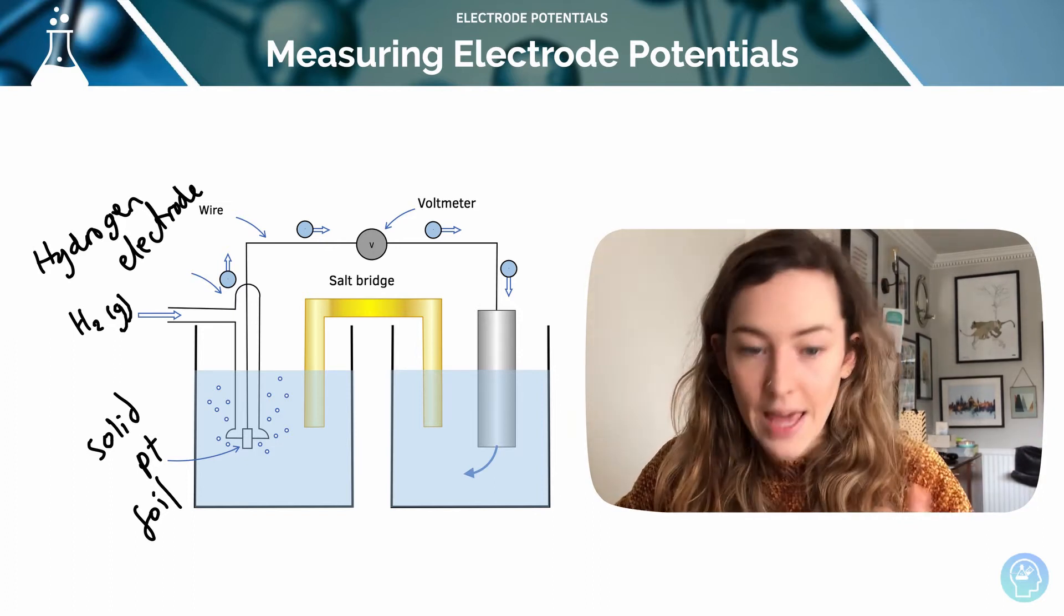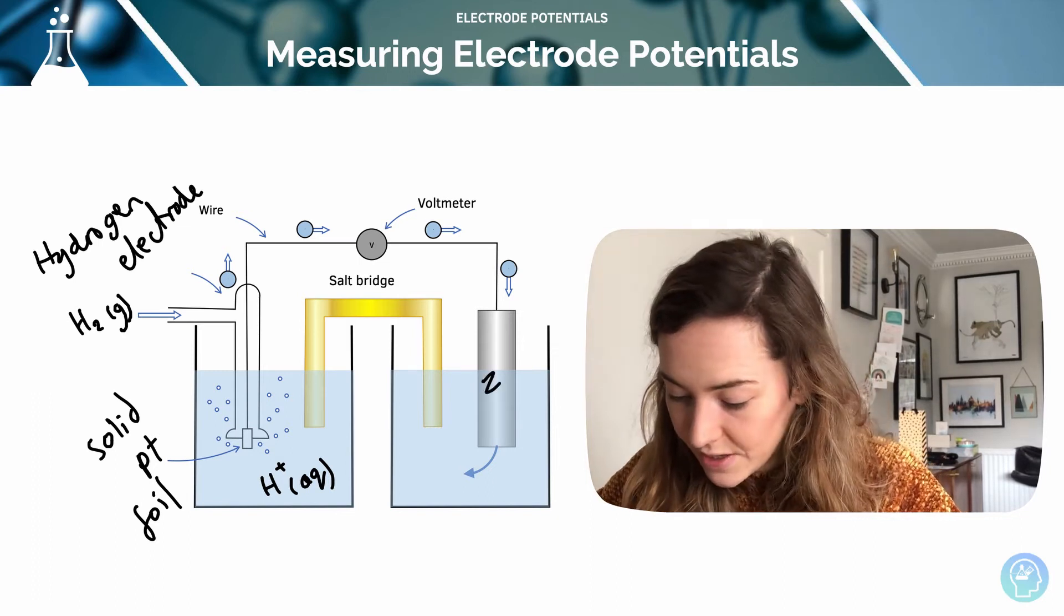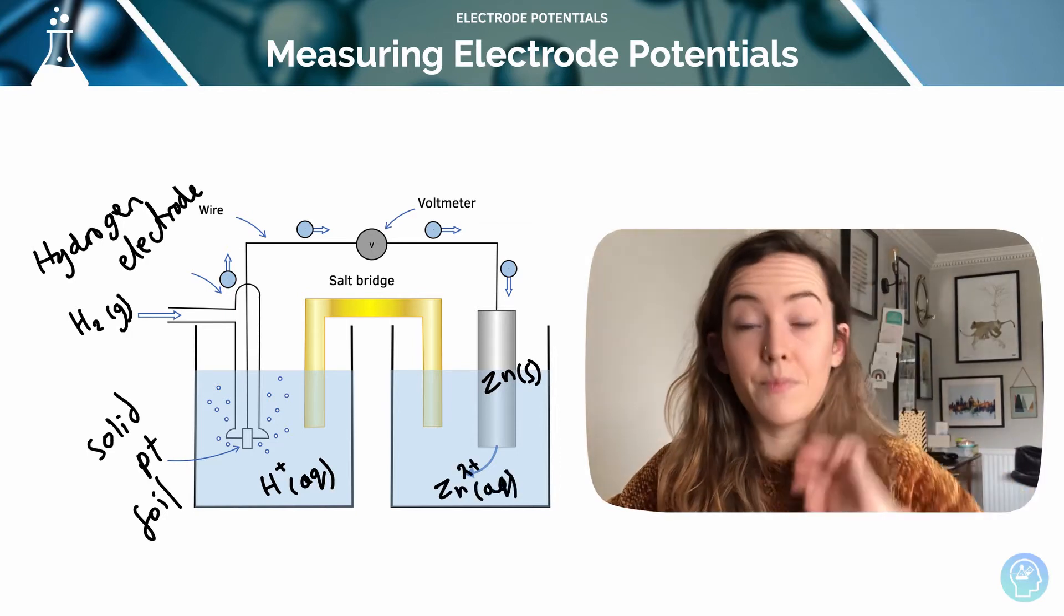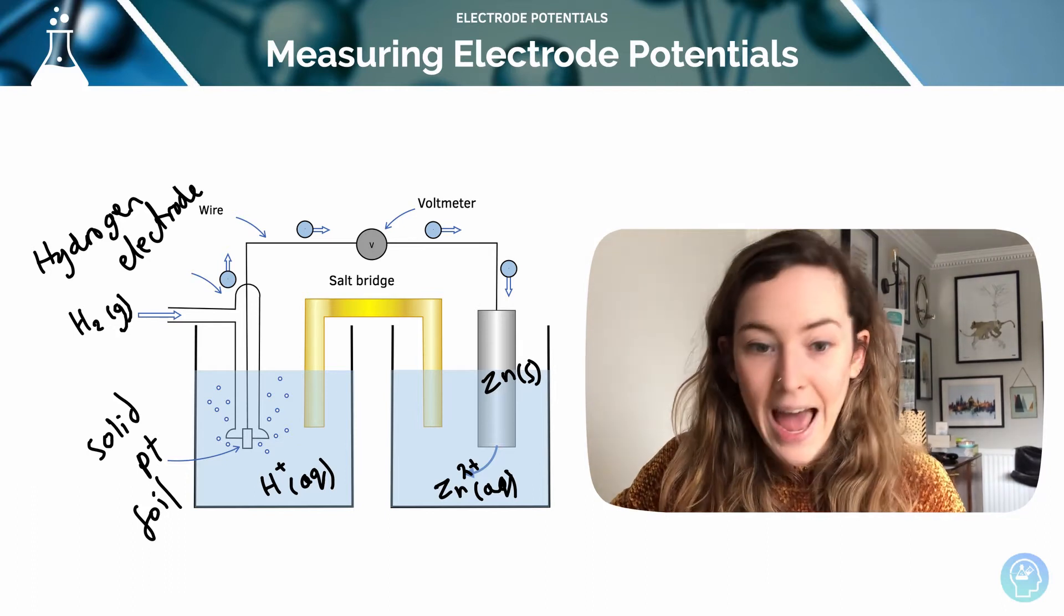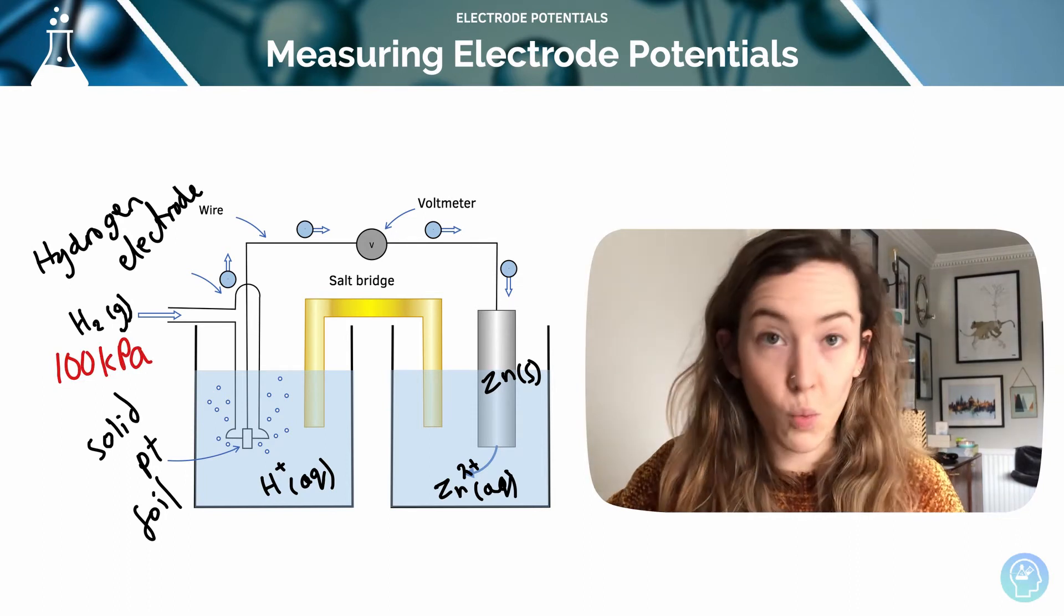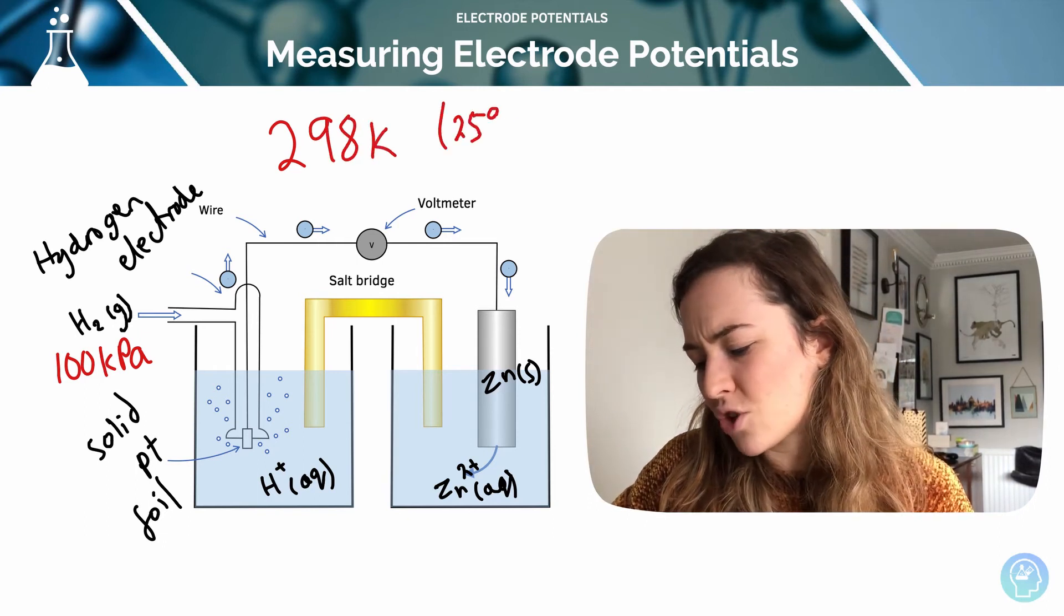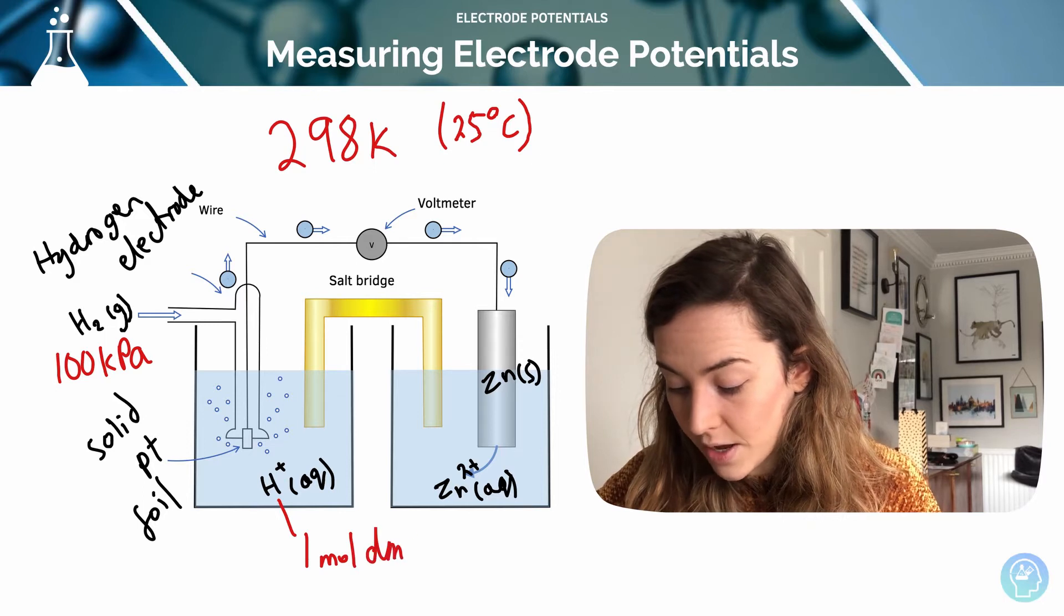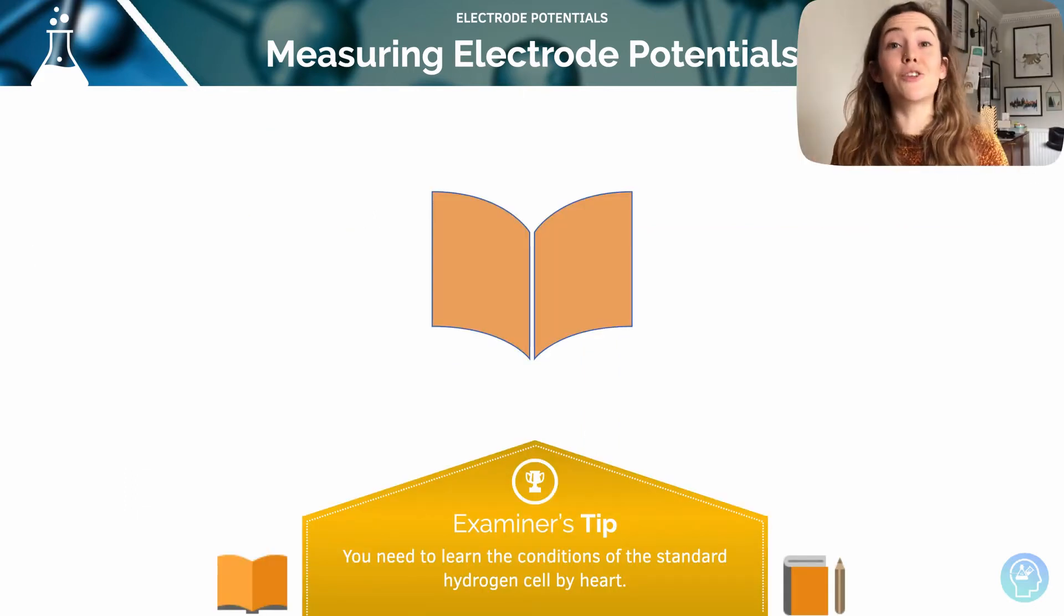The electrolyte of the half-cell is going to be a solution of H+ aqueous. On my other side I might be comparing it to, for example, a zinc half-cell. Now we're going to learn about standard conditions. In order to get a reading from this, it has to be under standard conditions. My gas has to be at 100 kilopascals, which is very close to one atmosphere of pressure. The temperature that this is happening at has to be 298 Kelvin, which is approximately 25 degrees Celsius. And my solution of my ions has to be one mole per decimetre cubed. If we don't have those conditions, we're not going to be getting that standard reading from our voltmeter. It's essential that you learn the conditions, the standard conditions for the hydrogen cell by heart.